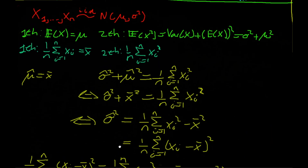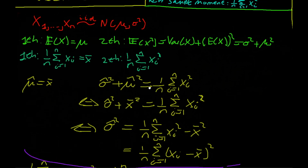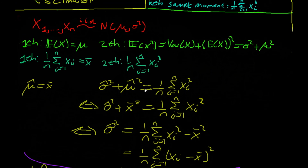There you have it — this is how we use the method of moments estimator to estimate two parameters from a sample that follows a normal distribution.